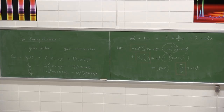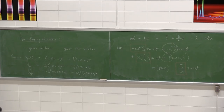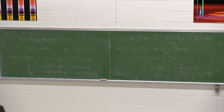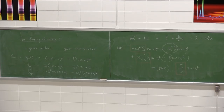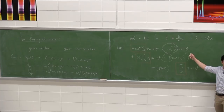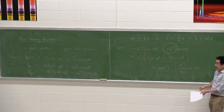Student question: in calculus, if the particular solution and the complementary solution have the same terms, you'd need to multiply by t. Answer: we'll get to that in the third type of vibration — damped vibrations. You don't need to worry about that here because this is not a duplicate situation, since omega_0 is different from omega_n.